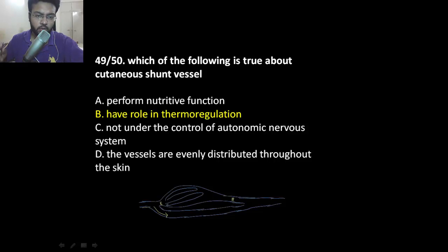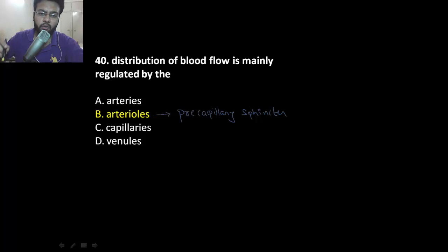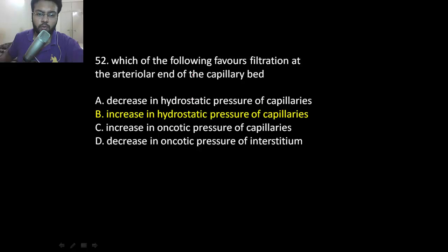Which of the following is true about cutaneous shunt vessels? These are also called thoroughfare channels. You might have noticed that when you are in a cooler environment, your tip of the nose, your hands, and soles are getting cooler faster. That's because your blood is shunting from that side and it is going where it is needed. These have an important role in thermoregulation. Distribution of blood flow is mainly regulated by arterioles because they have pre-capillary sphincters.